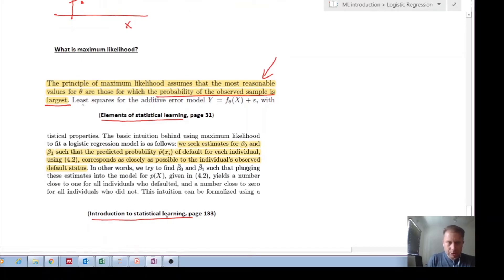So here from introduction to statistical learning page 133, the basic intuition behind using maximum likelihood to fit a logistic regression model is as follows. We seek estimates for beta zero and beta one such that the predicted probability of default, and what they're really saying is the probability of your thing, whatever the thing you're trying to do is equal to one.